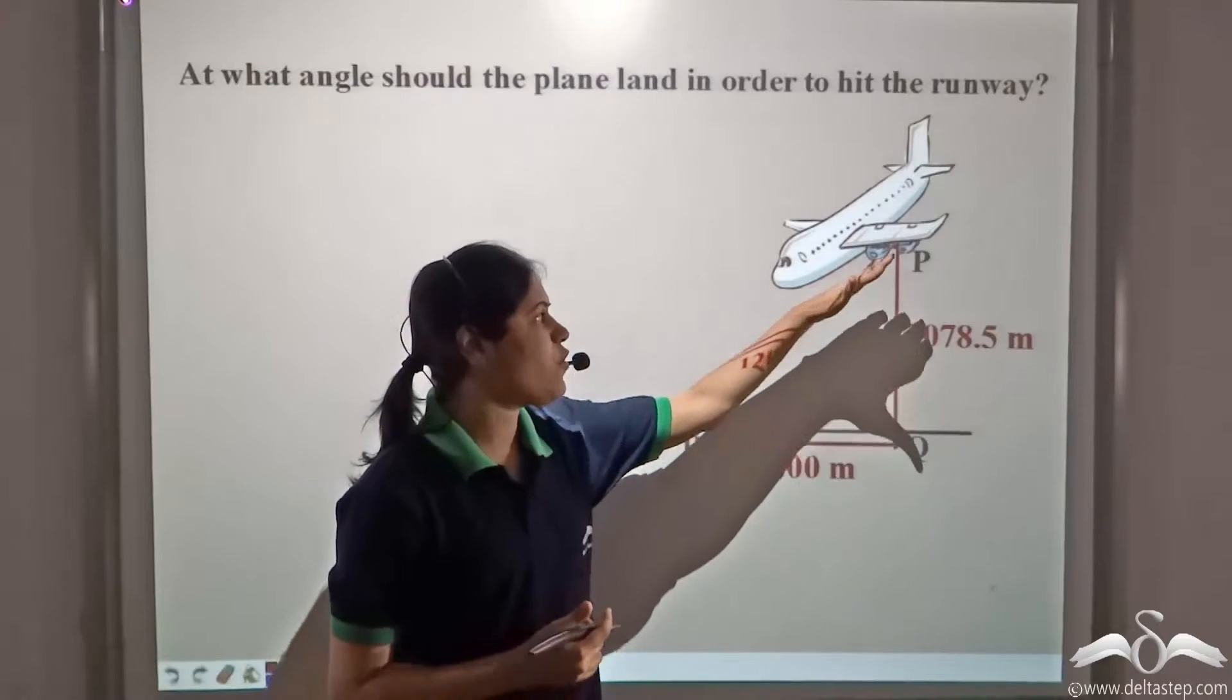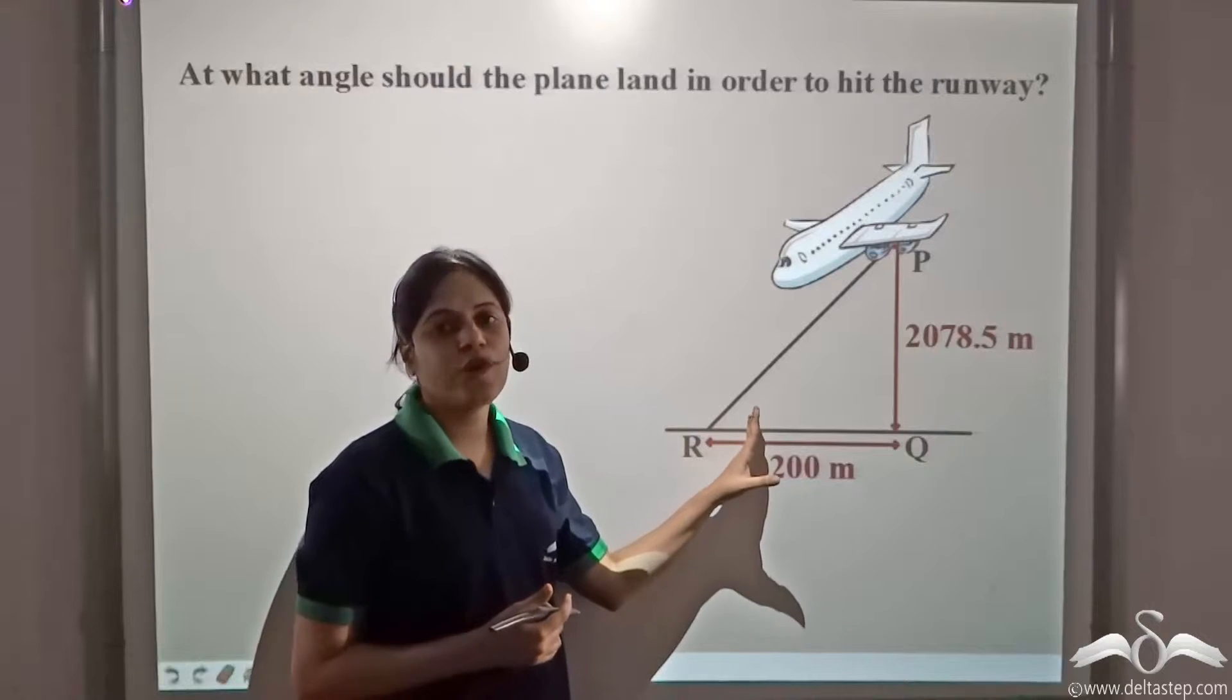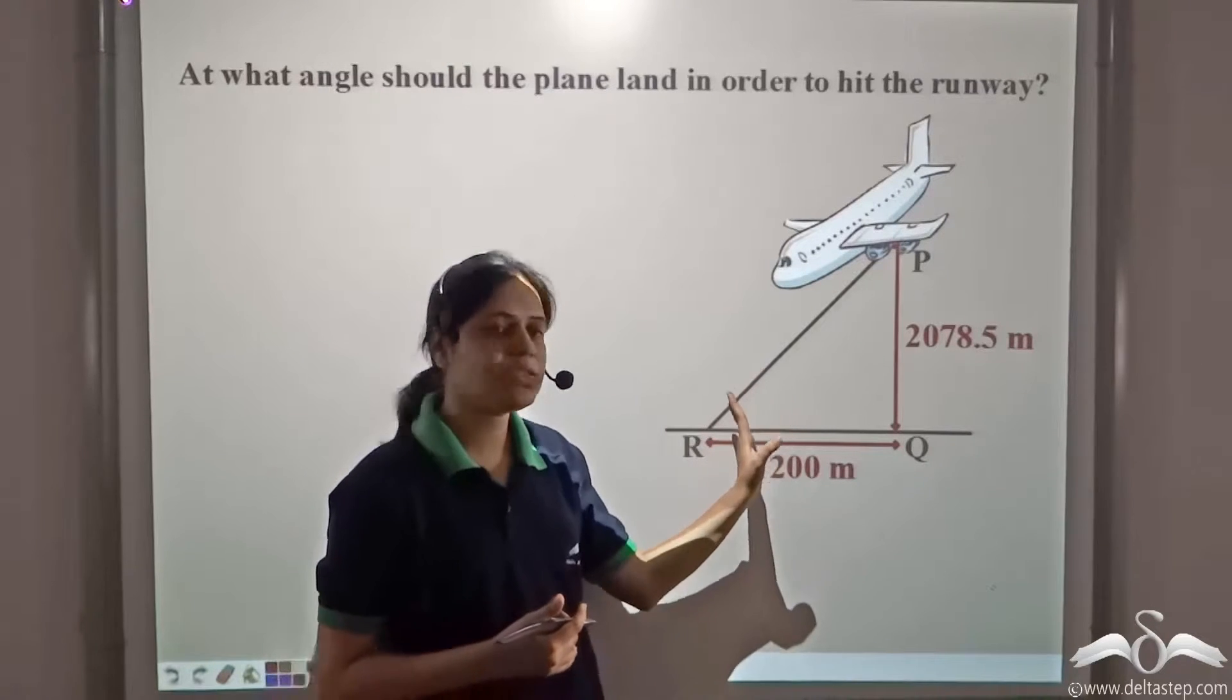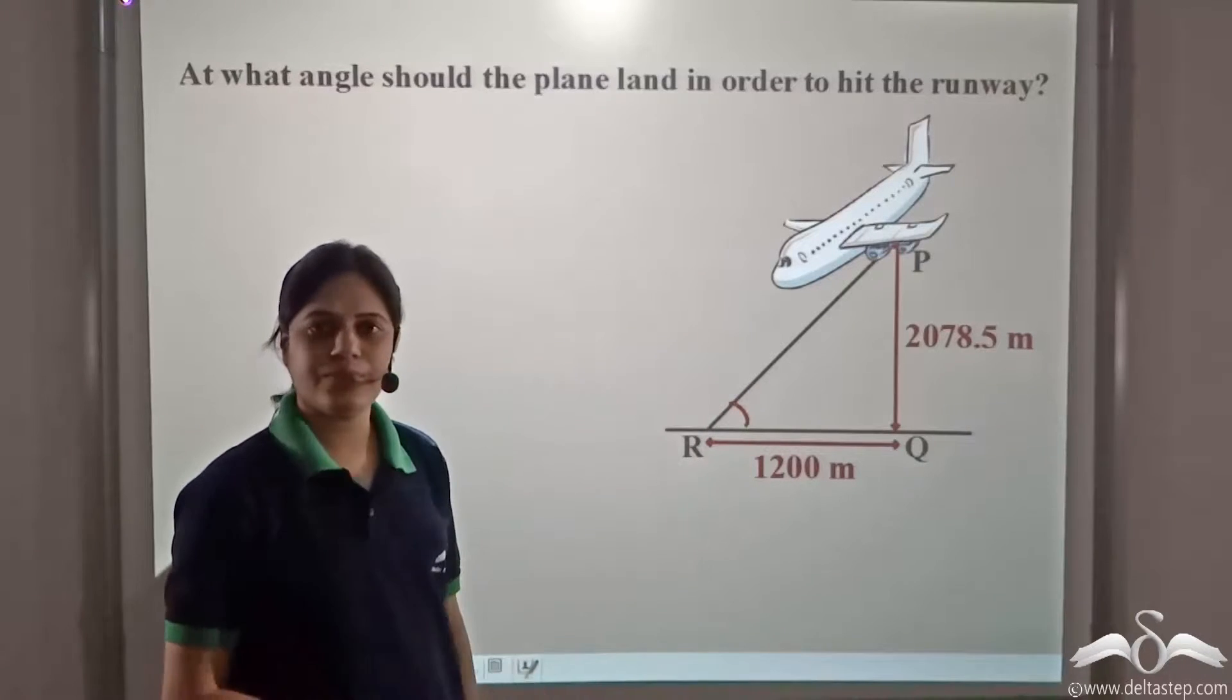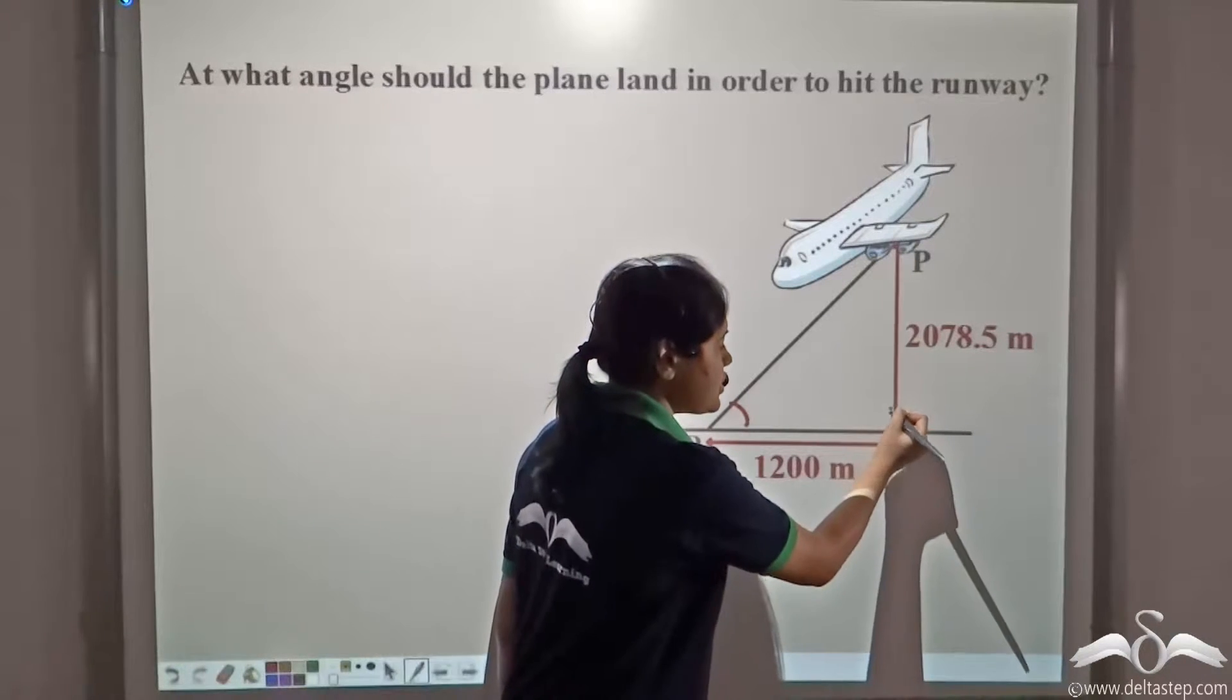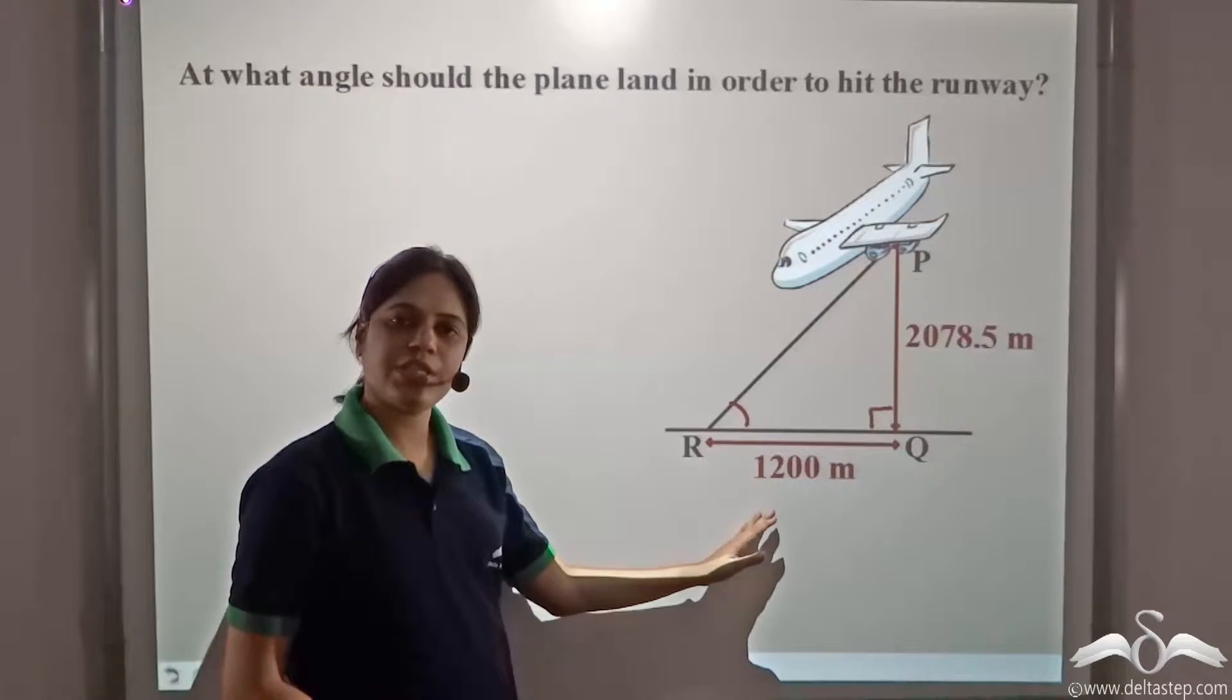Now at what angle should he make the plane land to hit the runway at R safely? We need to find this angle. This is a right angle, so we can use trigonometry.